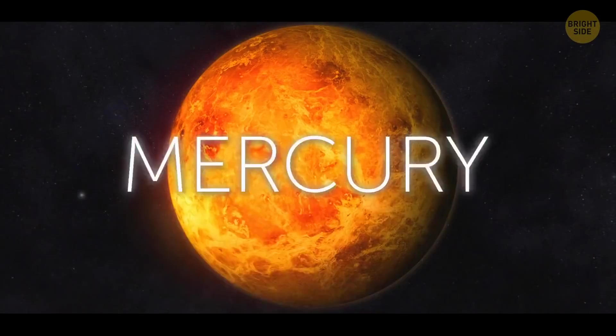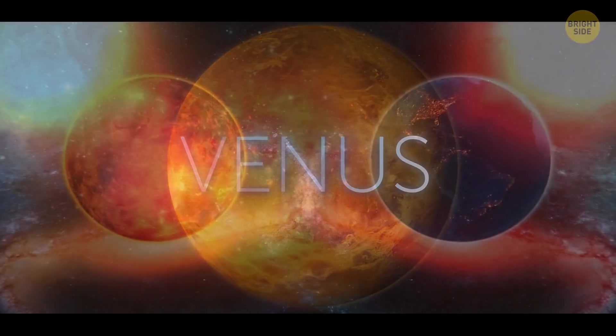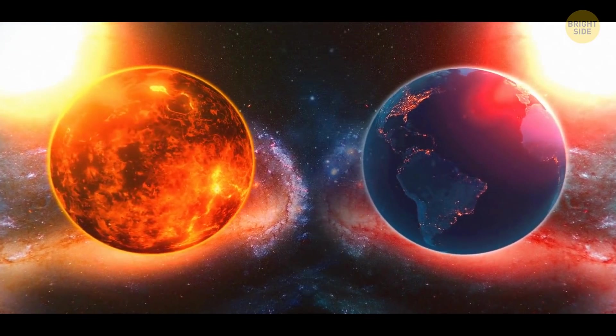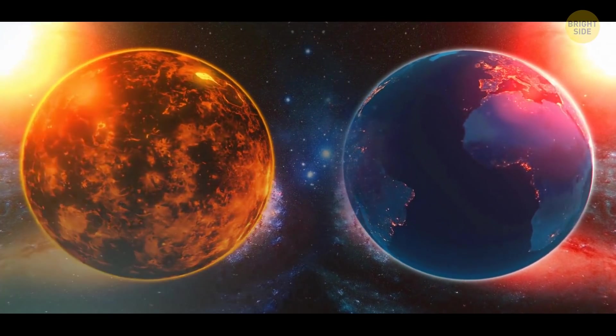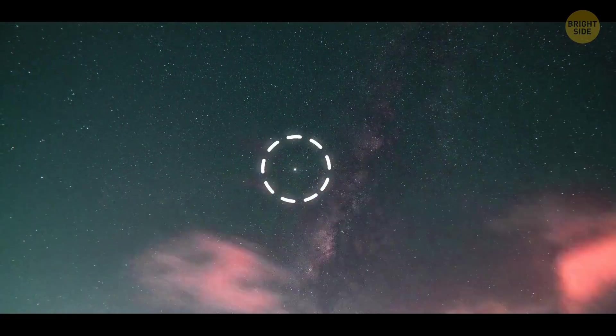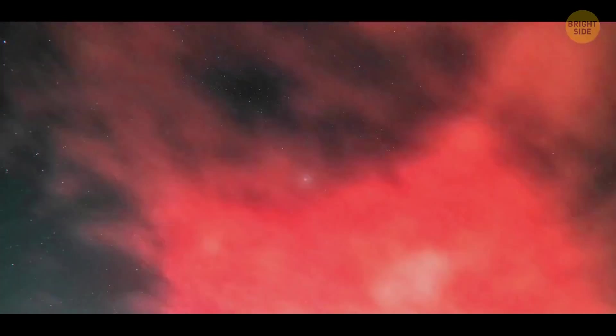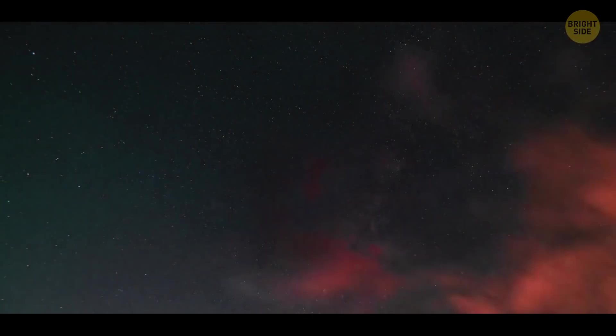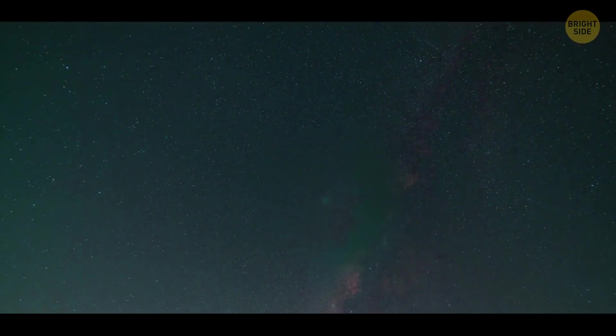Next in line is Venus. This hot planet is sometimes called Earth's twin sister. It's completely uninhabited, of course. Other than that, Venus is one of the brightest spots in our night sky. Pull it out of the solar system and, whoa, it's much darker at night. But still, not exactly a big deal.